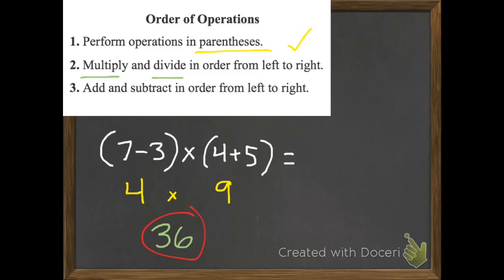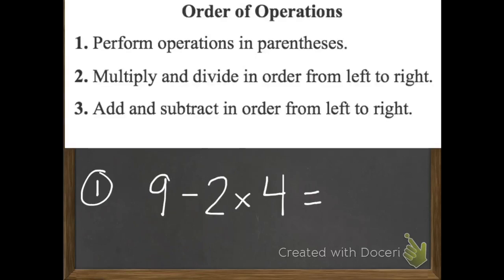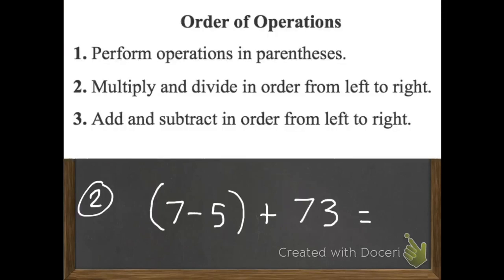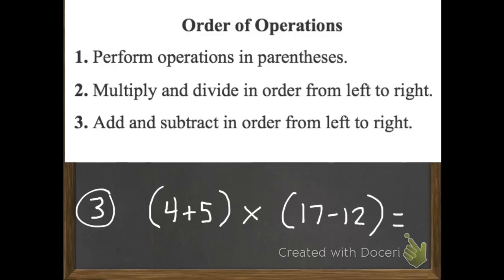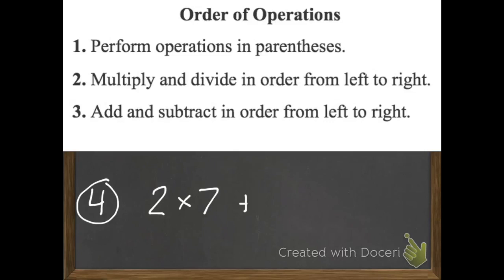Go ahead and try these next ones on your own. Here's your first question, number one: what is 9 subtract 2 times 4? Remember — first parentheses, then multiply and divide, then add and subtract. Number two: 7 subtract 5 plus 73. Number three: 4 plus 5 times 17 subtract 12. Last of all, number four: 2 times 7 plus 18 divided by 6. Make sure to have this ready in the morning, and we'll see you on our next lesson tomorrow.